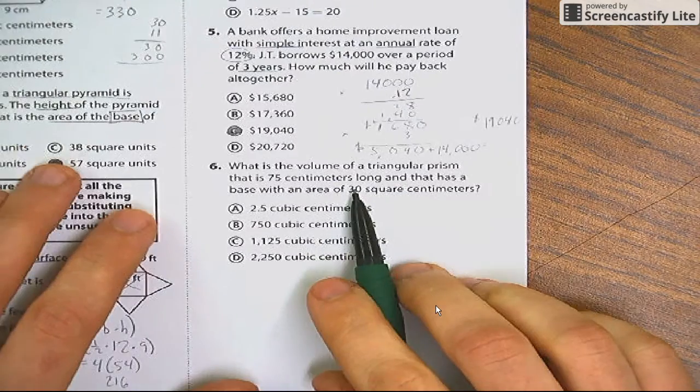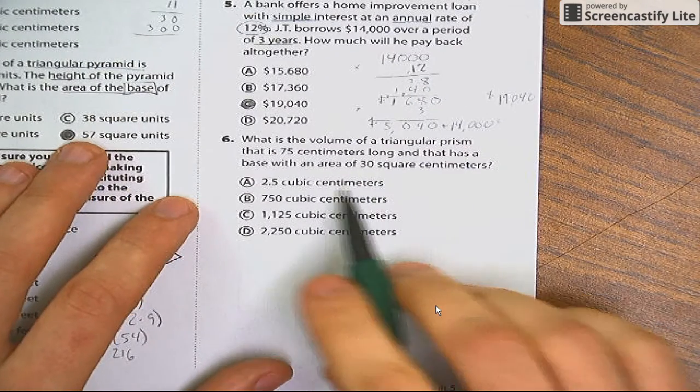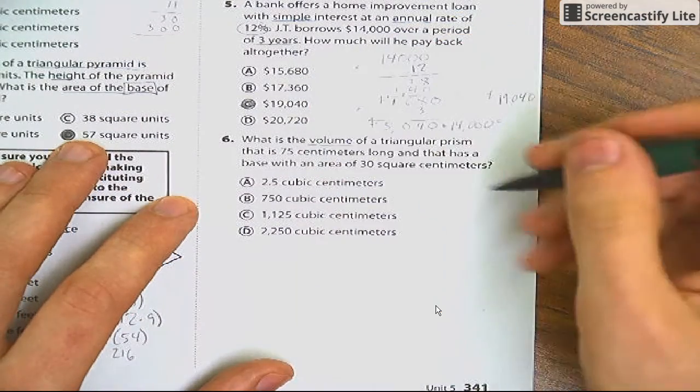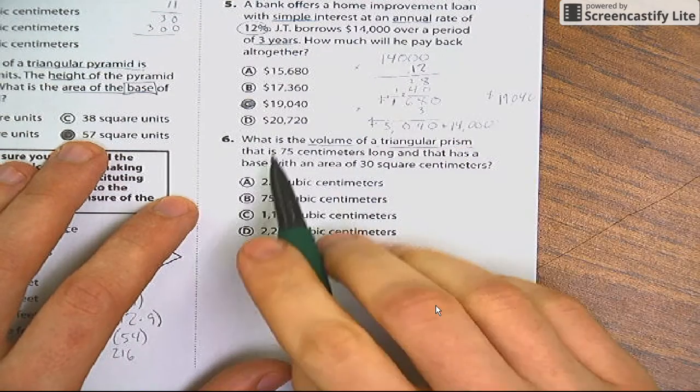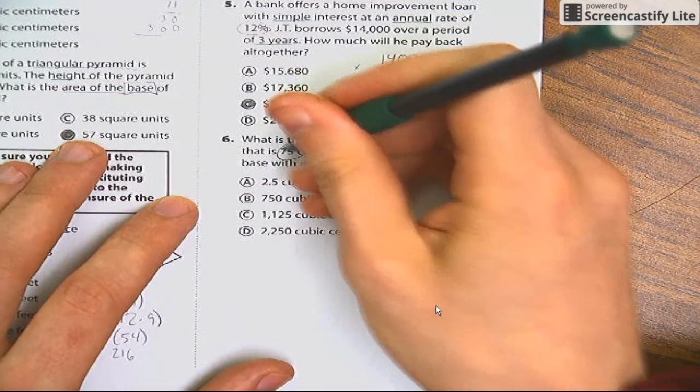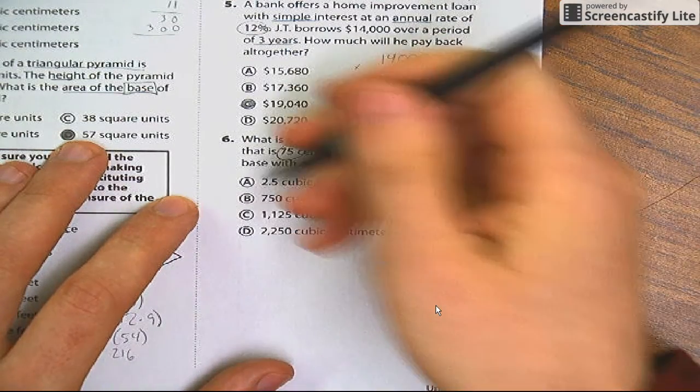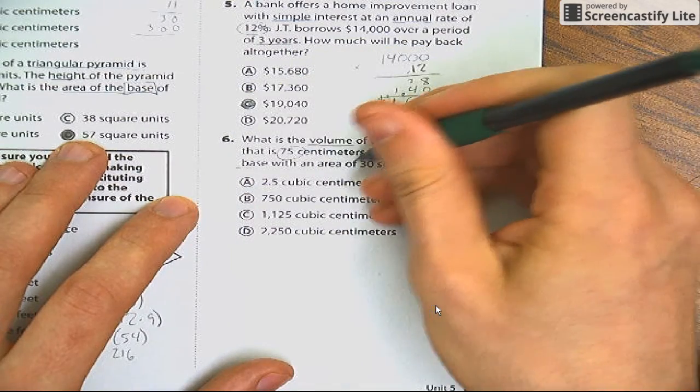Which is choice C. Okay. Number six. Here, we're back in familiar territory. What is the volume of a triangular prism that is 75 centimeter long? That's the length. And that has a base with an area of 30 square centimeters.